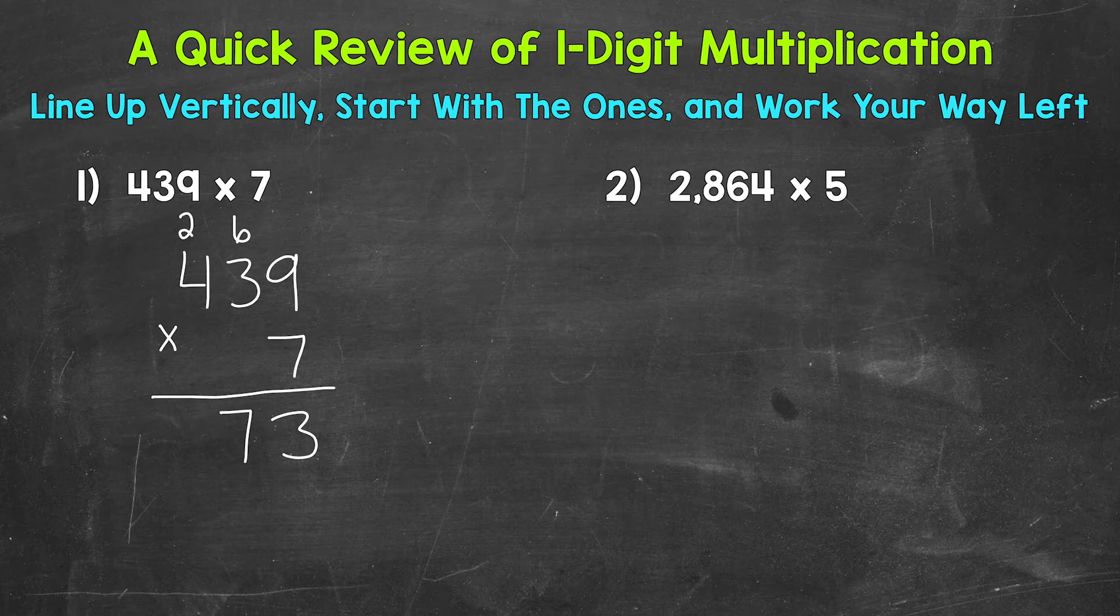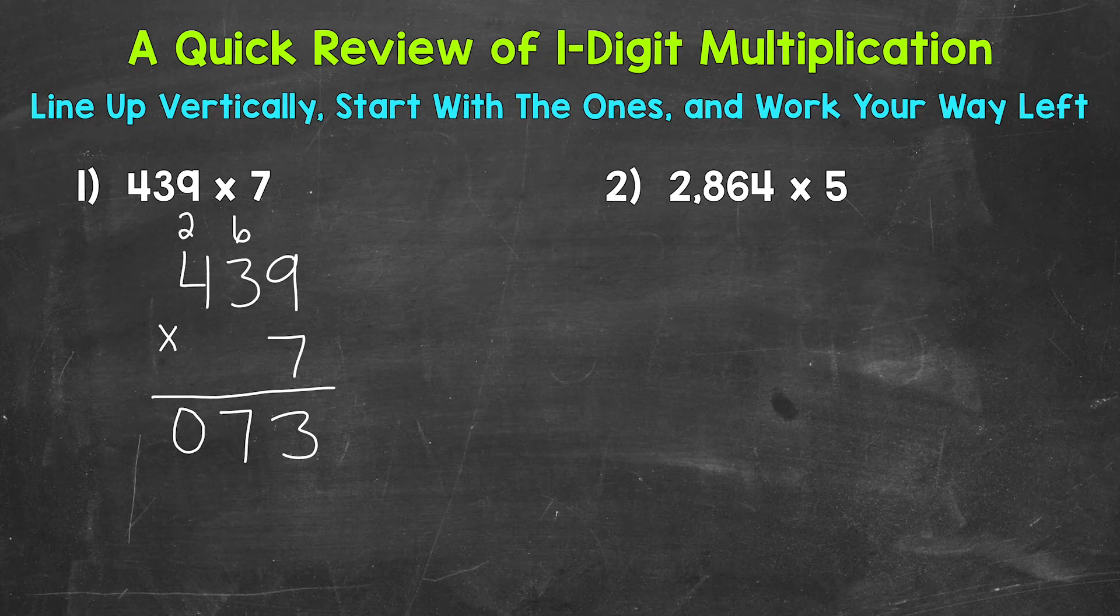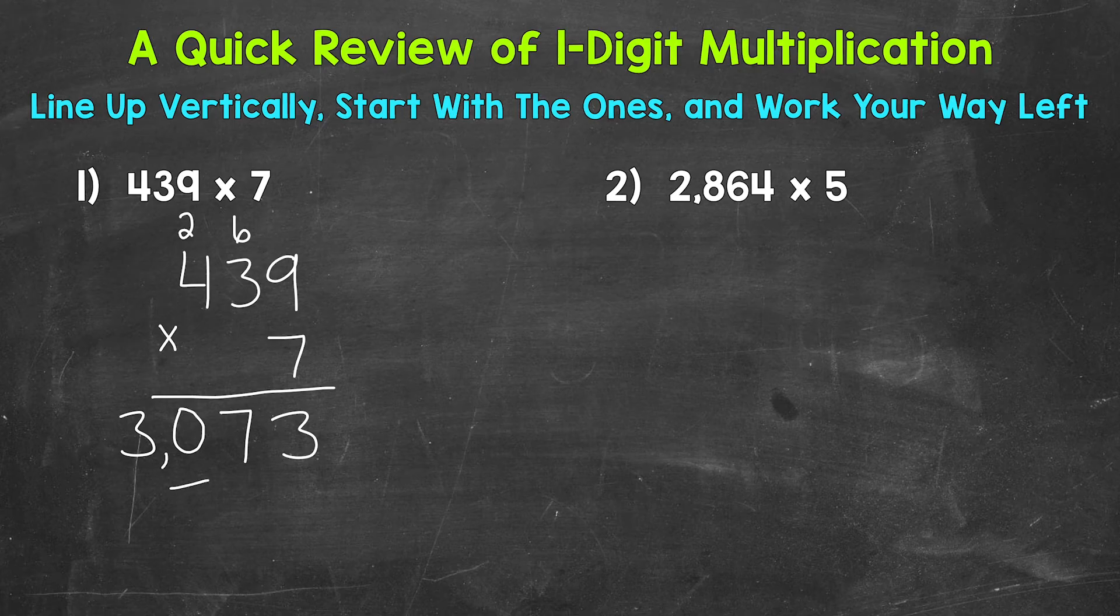And then we have the hundreds place. So a 4 is in the hundreds place. 7 times 4 is 28, plus 2 is 30. So we can put our 0. Now there are no more places to the left, so let's just bring our 3 down into the thousands place. Put our comma, and our final answer is 3,073.